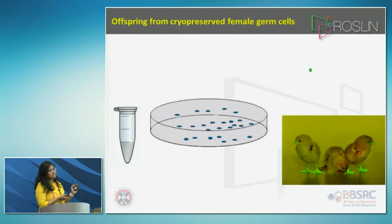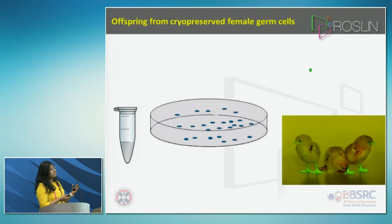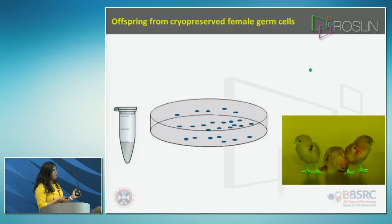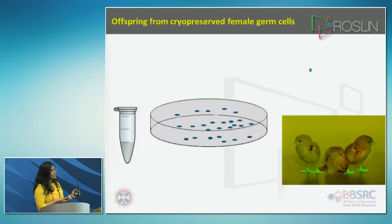When these cells are injected into the host recipient, there is a competition between the survival of the injected cells and the host's own germ cells. But the experiment was successful, and we observed that whatever genotype the cells had in the cell culture dish, the same genotype was observed in the offspring as well. Basically, I'm going to use this system.